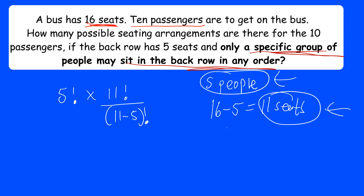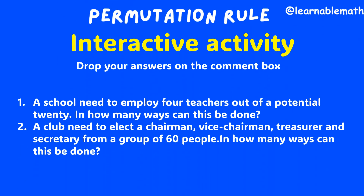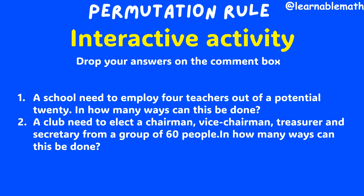On the calculator I'm getting 6,652,800. So there are six million, six hundred and fifty-two thousand, eight hundred different arrangements — where we have 16 seats, a specific group of five people seated at the back, and the remaining five arranged in the other seats. There are quite a lot of arrangements possible.